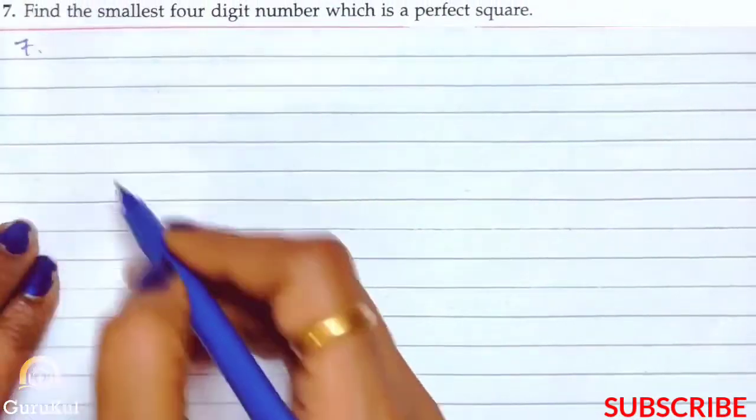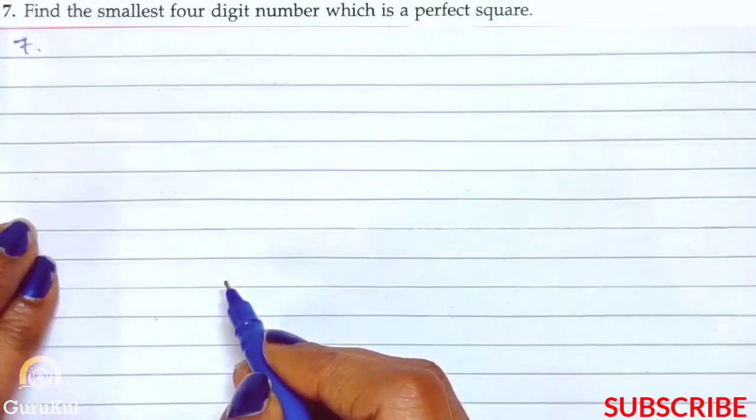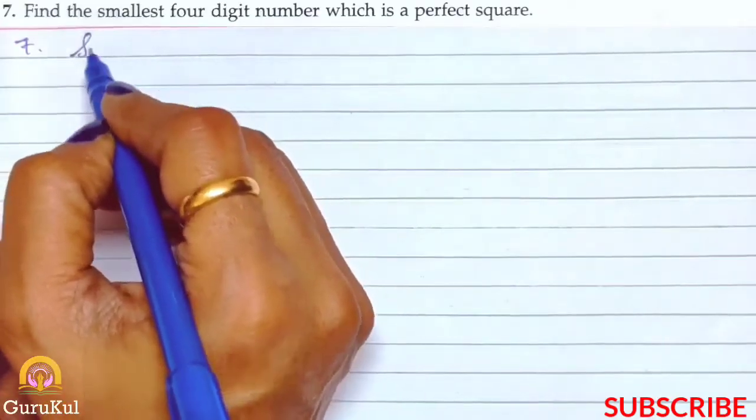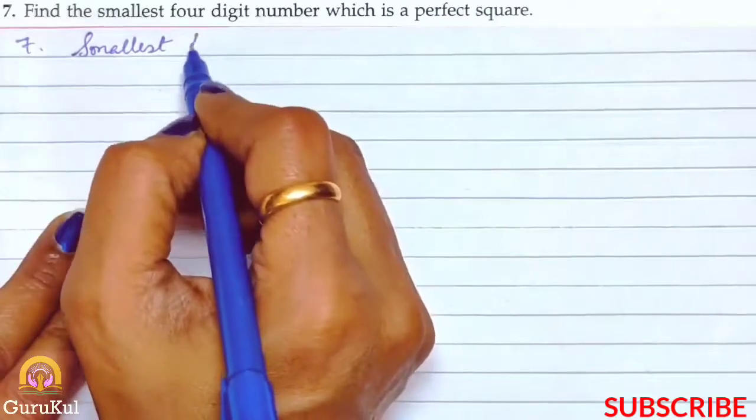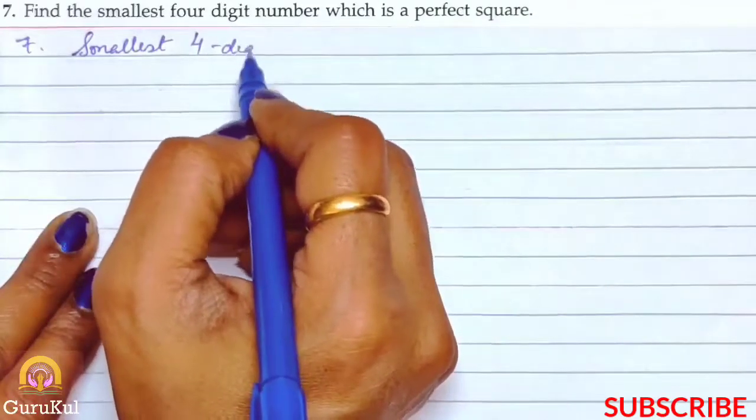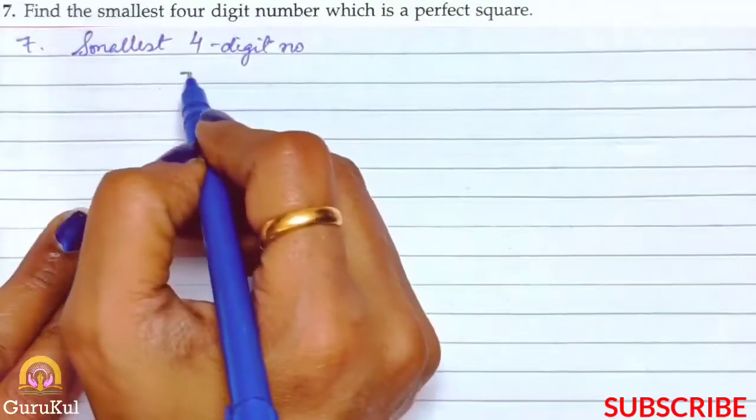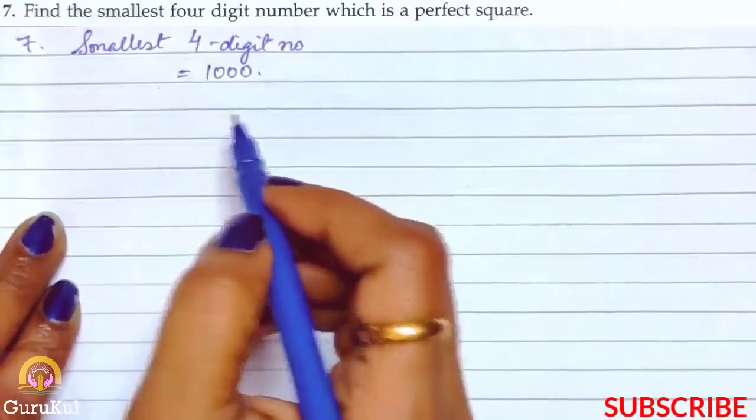Now question number 7, we have to find the smallest 4-digit number which is a perfect square. So, sab se pehle, we all know smallest 4-digit number is 1000. Now we have to find the square root.